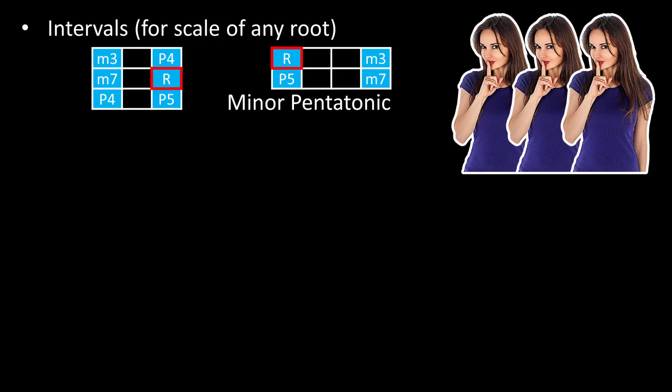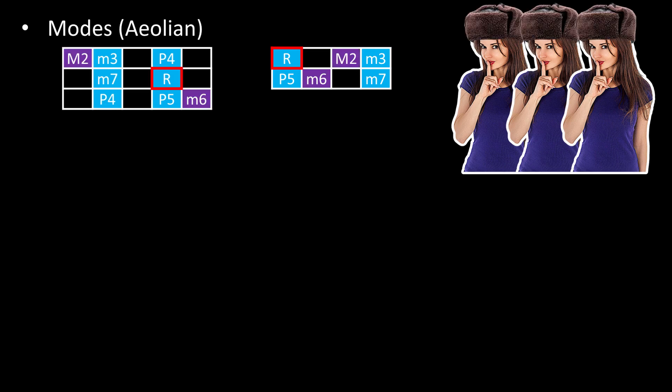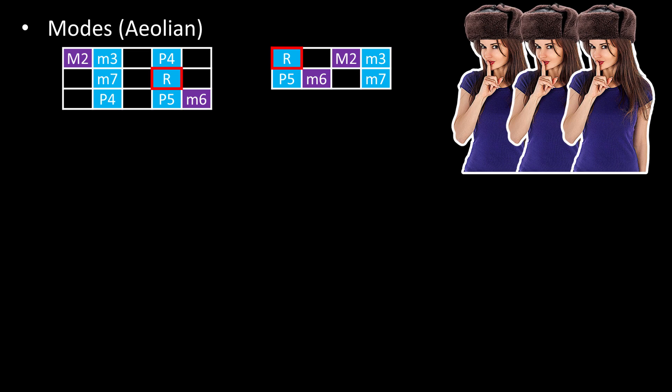Here are the minor pentatonic boxes. And here's how we accessorize them to create the natural minor or Aeolian mode. Here's how we would accessorize them for the Dorian mode. And so on.